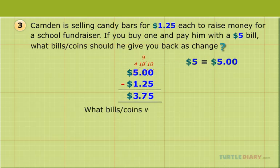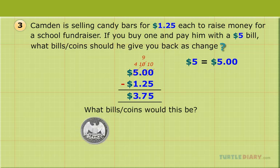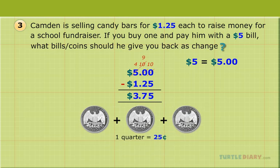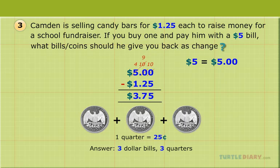What bills and coins would this be? Of course, $3.00 is three dollar bills, and $0.75 is three quarters. Answer: three dollar bills, three quarters. Don't forget to ask yourself if the answer makes sense, which it does.